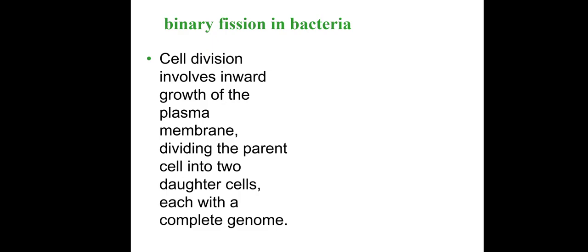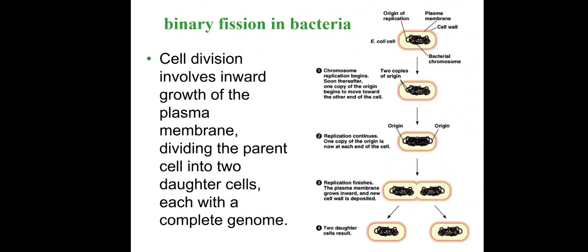Bacteria reproduce by binary fission or amitosis. Cell division involves the inward growth of the plasma membrane, dividing the parent cell into two daughter cells, each with a complete genome. First, chromosome replication begins and one copy of the origin moves toward the other end of the cell. Replication continues until one copy is at each end. Then replication finishes, the plasma membrane grows inward, new cell wall is deposited, and two daughter cells are formed. It is a simpler kind of division than mitosis, hence called amitosis or binary fission.